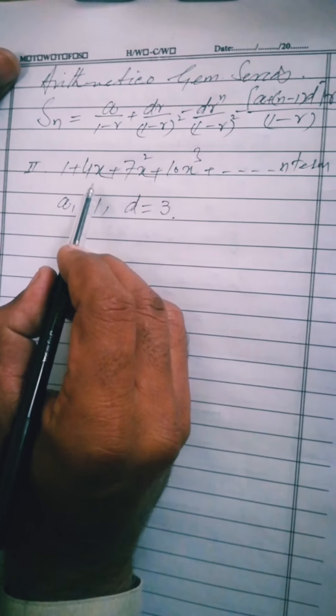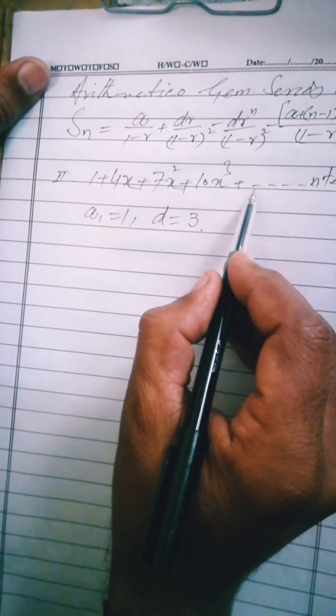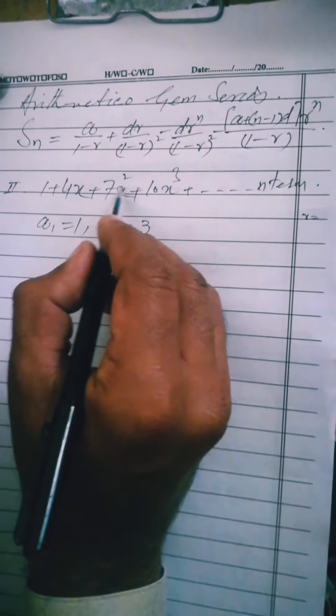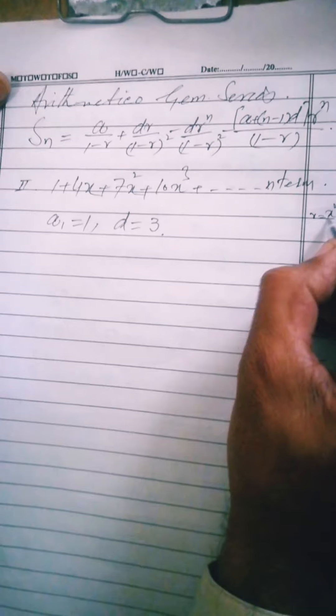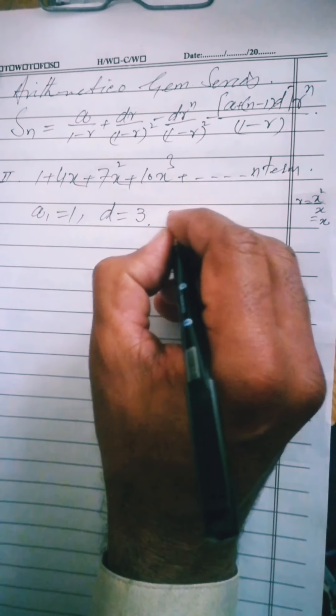And r. Here the series is x, x square, x cube, x to the fourth, continuing like this. So r which is formed: r equal to x square by x, so that is x. x cube by x square, so again x. So our r will be x.